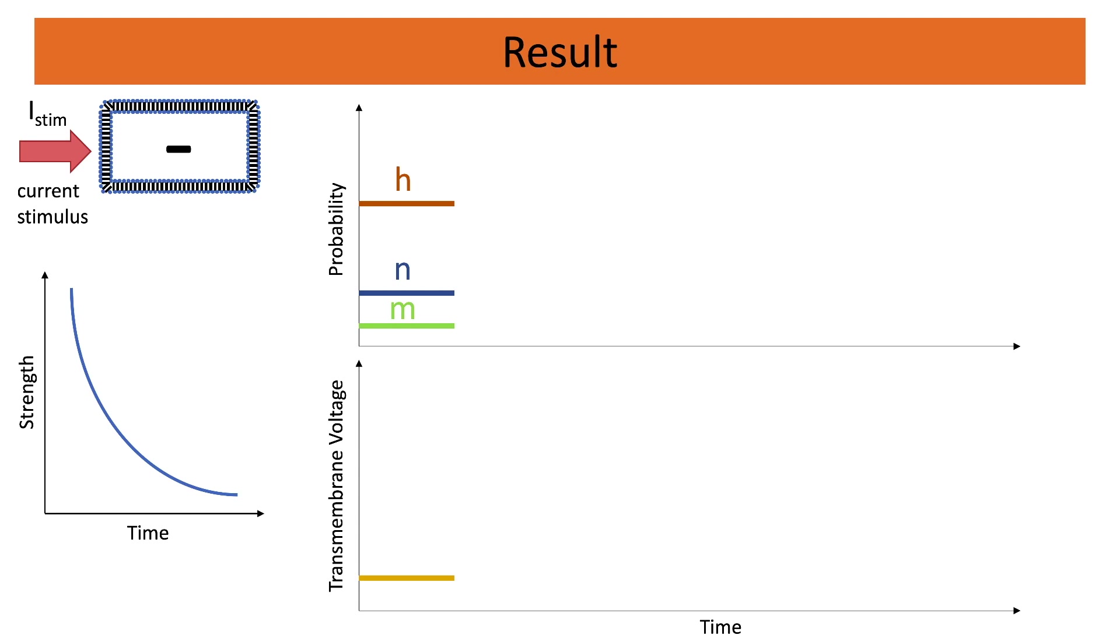And to have a successful stimulation we need to have sufficient strength over a sufficient amount of time. If we have a high amount of strength we can use a small time window to give the stimulus. And if we use less strength we need to give the stimulation for a longer time.